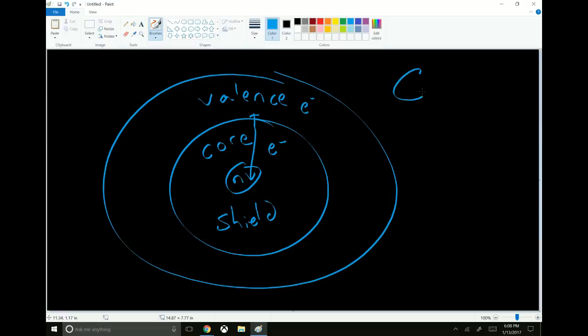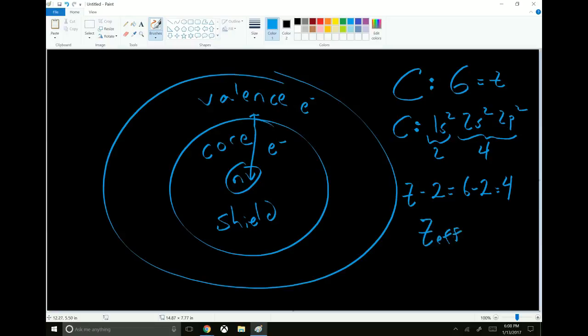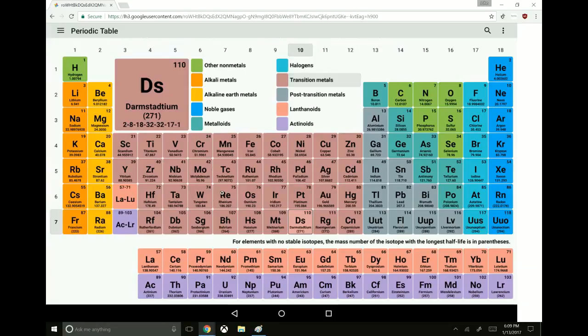To find effective nuclear charge, you take the total number of protons and subtract the core electrons. For example, carbon has six protons, and carbon's electron configuration is 1s2 2s2 2p2. So it has two core electrons, four valence electrons, and the effective nuclear charge is Z minus two, six minus two equals four. It's not a coincidence that the effective nuclear charge is equal to the number of valence electrons. The effective nuclear charge can get kind of strange when you're looking at the transition metals, but it works just fine for the S block and the P block.